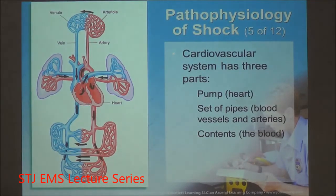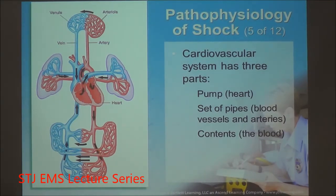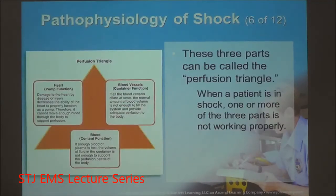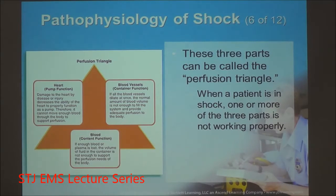For continual pressure to exist, the circulatory system must have all three structures functioning: a good pump, a good set of pipes, and enough fluid — the contents. Lack of any one of these leads to the pathophysiology of shock. This is the perfusion triangle. Let's look at it: first, blood vessels — container functionality.